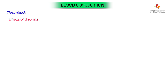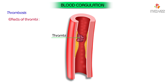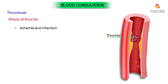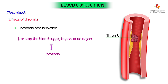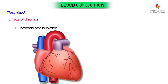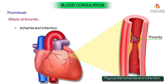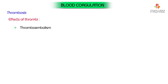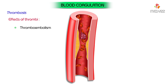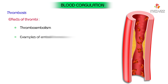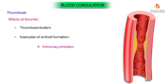Effects of thrombi: intravascular thrombi may cause variable effects depending upon the size and site. Thrombi cause harmful effects by the following mechanisms: ischemia and infarction — thrombi may decrease or stop the blood supply to part of an organ and cause ischemia, which may subsequently result in infarction; for example, thrombus formation in the coronary arteries may cause myocardial ischemia and infarction. Thromboembolism — the thrombus or its part may get dislodged and carried along in the bloodstream as an embolus to lodge in a distant vessel, with examples including pulmonary embolism and cerebral embolism.